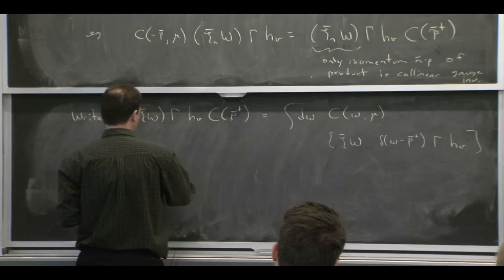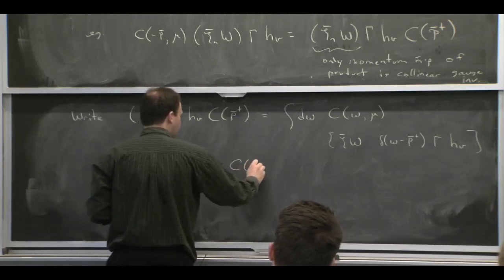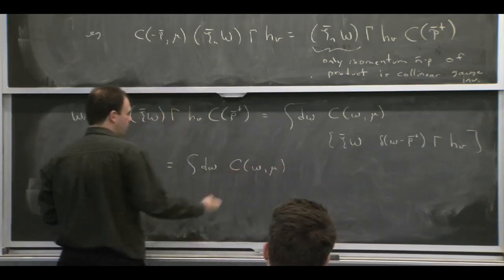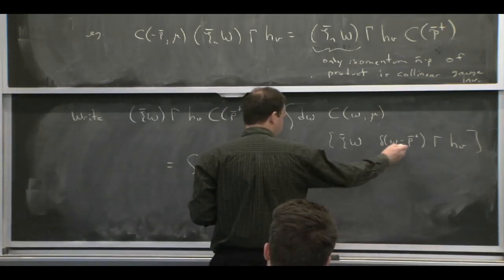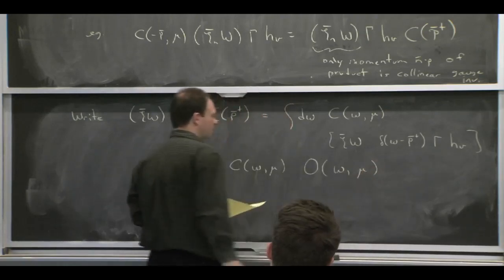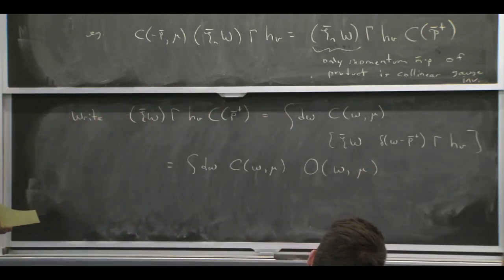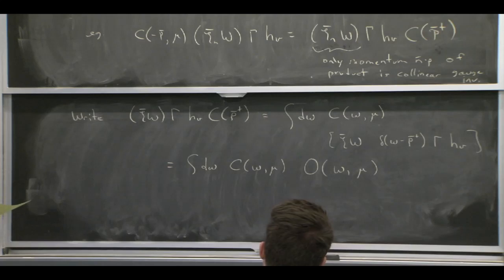But if I write it this way, what I get is that my Wilson coefficients are just functions of a number, not functions of an operator. And my operators have these delta functions in them. But then it could depend on some variables that are distinguishing those delta functions, OK?